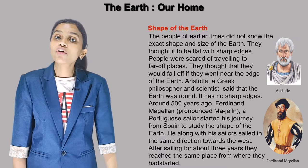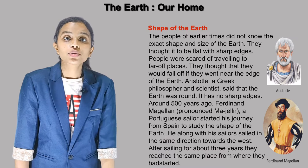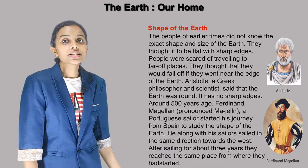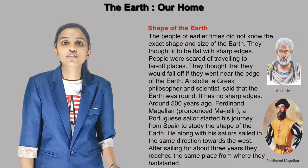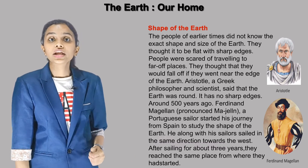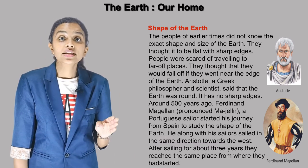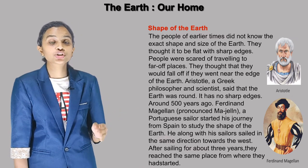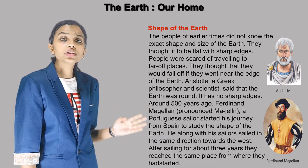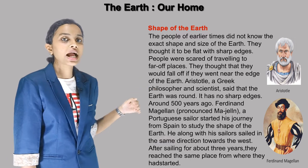Around 500 years ago, Ferdinand Magellan, a Portuguese sailor, started his journey from Spain to study the shape of the earth. He along with his sailors sailed in the same direction towards the west. After sailing for about 3 years, they reached the same place from where they had started.